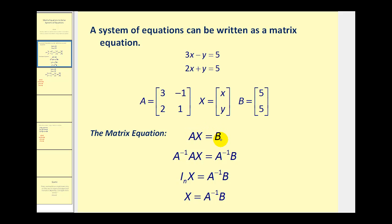If we use what we know about matrices to solve this equation for X, this gives us a new way to solve a system of equations. The next step is to find the inverse of matrix A and then multiply both sides of the equation by that inverse matrix. Remember, if we multiply A inverse times A, that will give us the identity matrix. Then if we multiply the identity matrix times matrix X, that will give us just matrix X. So by following this process we have solved the matrix equation for X, and the variable matrix will be equal to the product of A inverse and B.